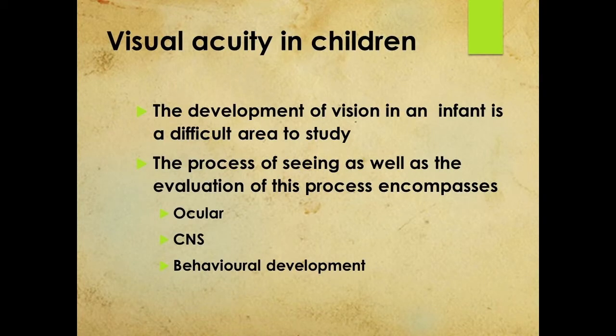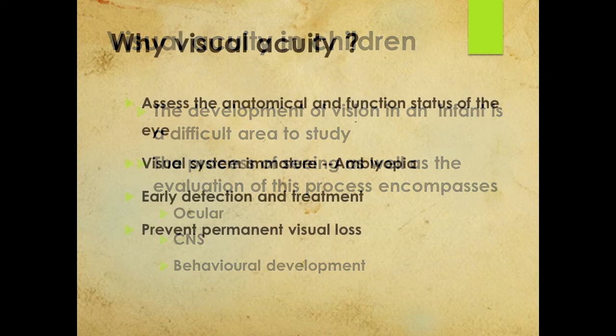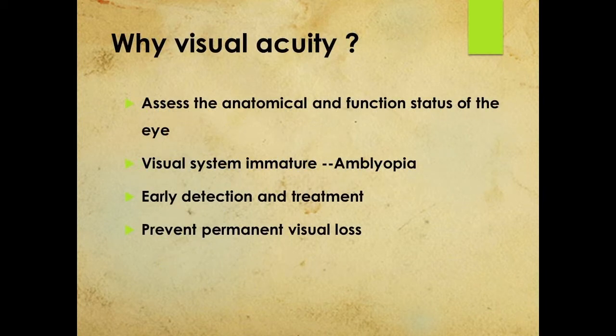Babies and children learn to see over a period of time, like they learn to walk and talk. They are usually not born with all the visual abilities they need in life. The ability to focus their eyes, move them, and use them together in coordination must be learned. Visual information is sent to the brain and processed, involving the eye, the central nervous system, and behavioral development. Visual acuity is used to assess the anatomical and functional status of the eye.